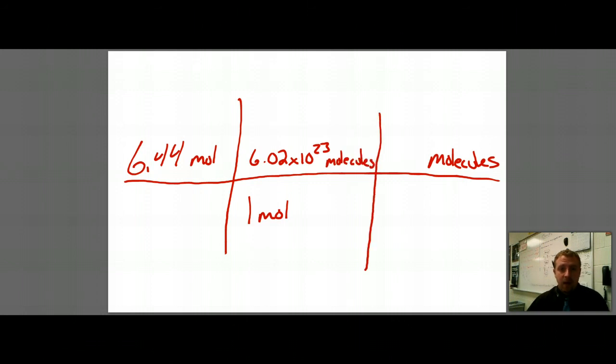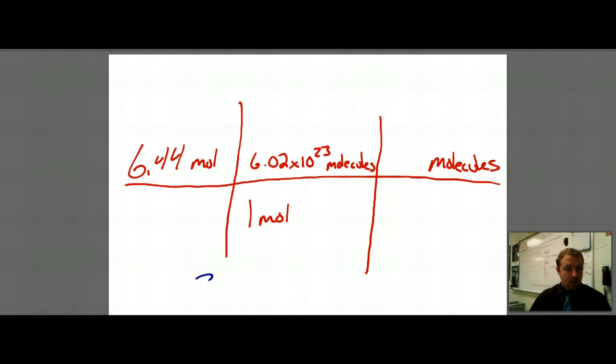So I go ahead and just multiply the two numbers. So if you take out your calculating device, and you take that number that you previously calculated and multiply it by 6.02 times 10 to the 23rd, you get 3.87 times 10 to the 24th molecules.